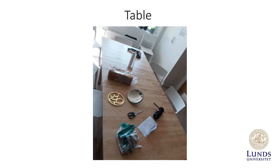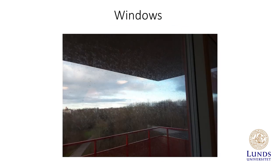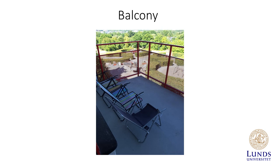Table: clean the table late in the process — it can be used as a storage area while cleaning the refrigerator, freezer, cupboards, and drawers. Windows: you don't need detergents for windows or mirrors; clean them with water and then use paper or a towel to polish the glass. Balcony: it is easier to clean the balcony later in the process, and it can be used as storage for food while cleaning the refrigerator and freezer, especially during the colder months.